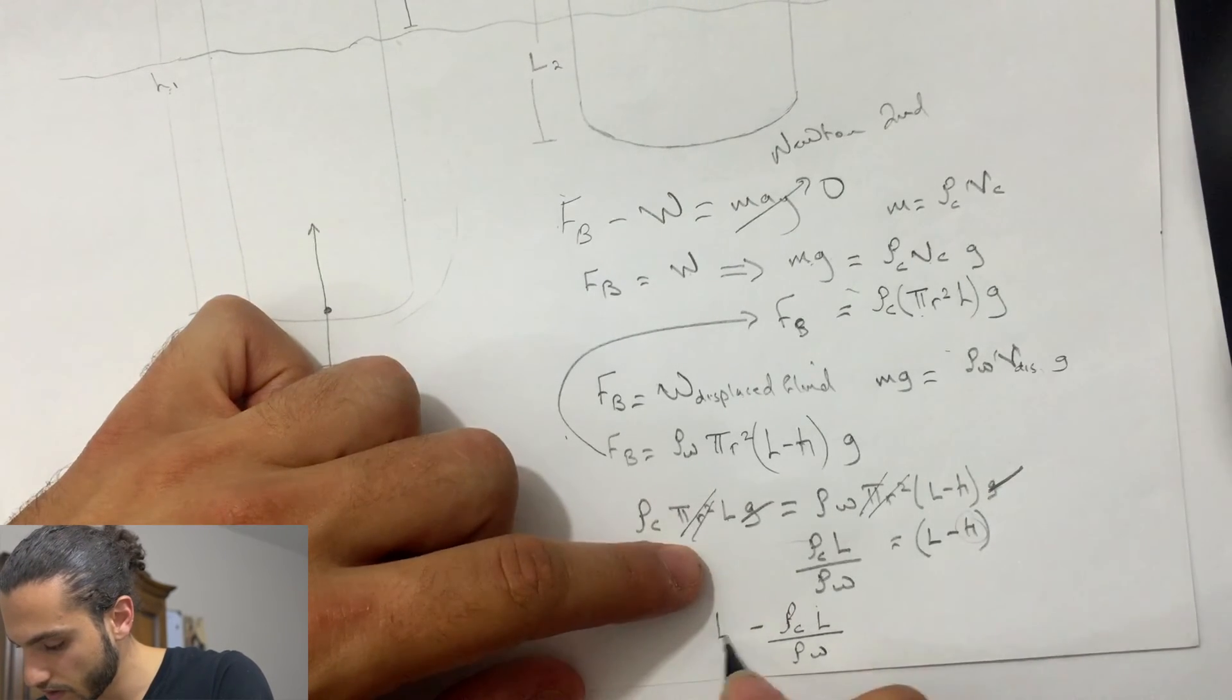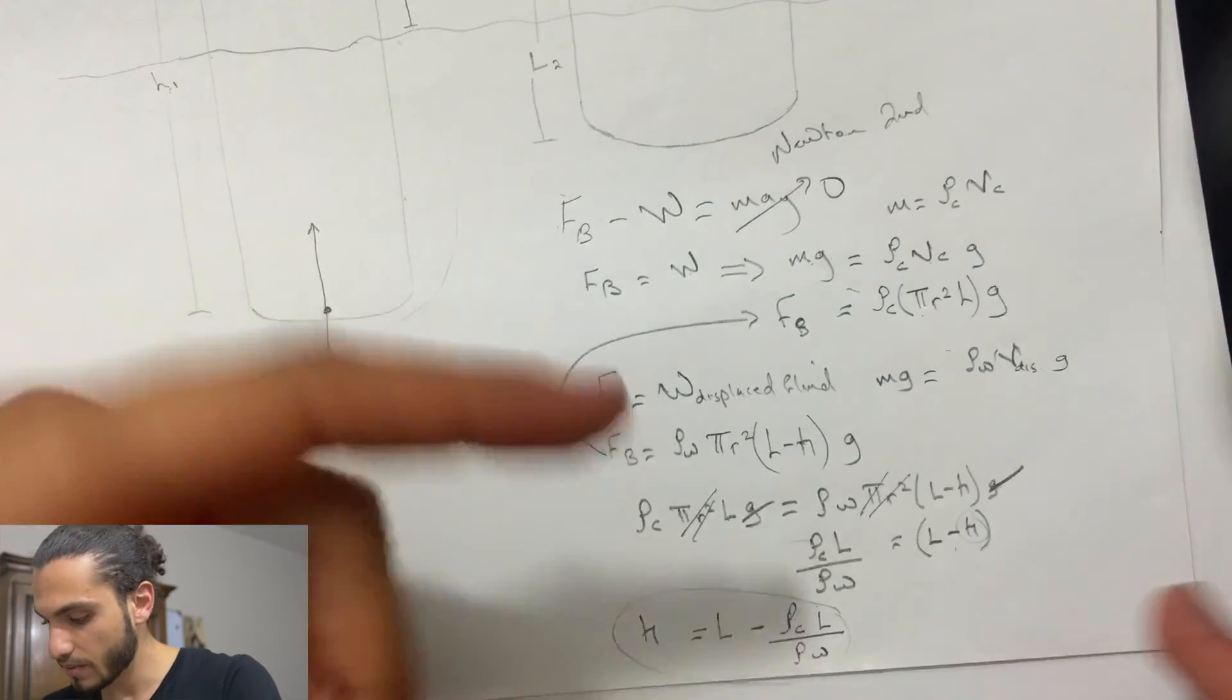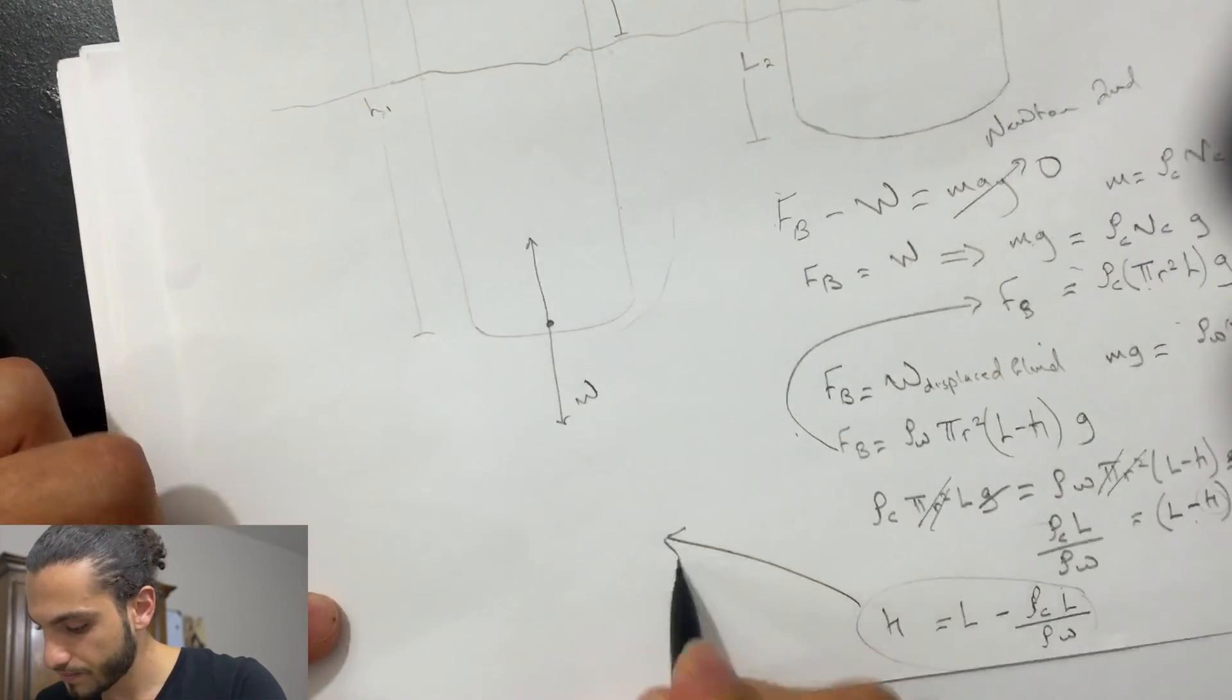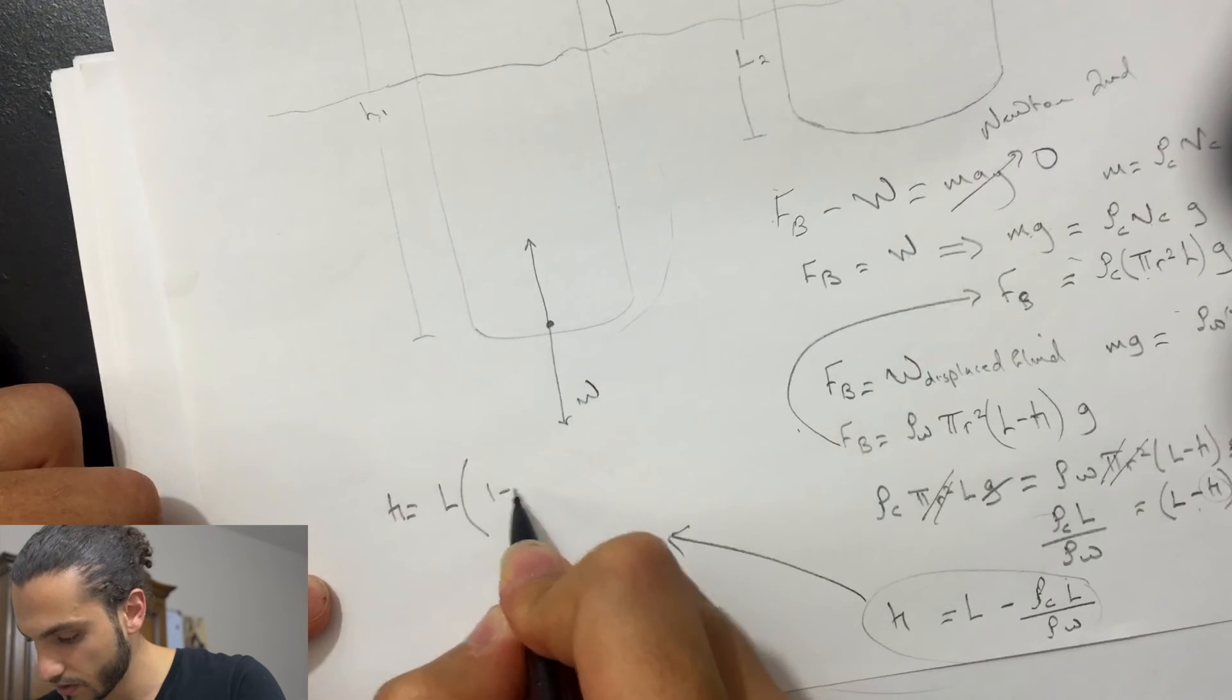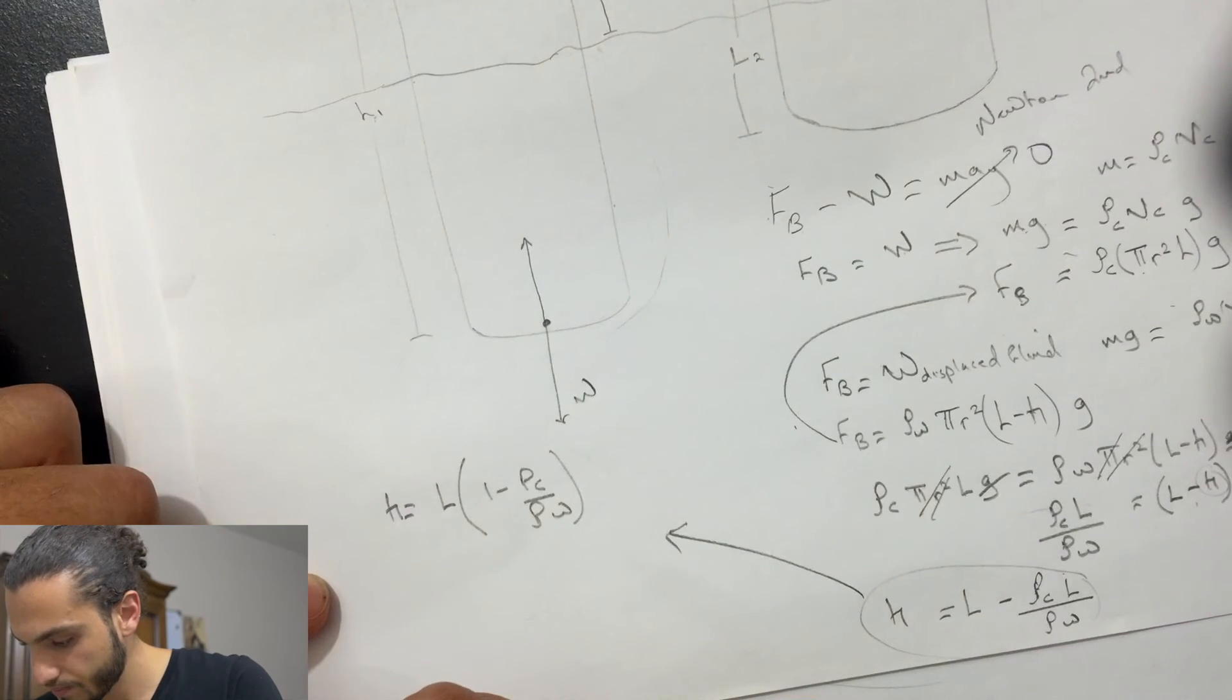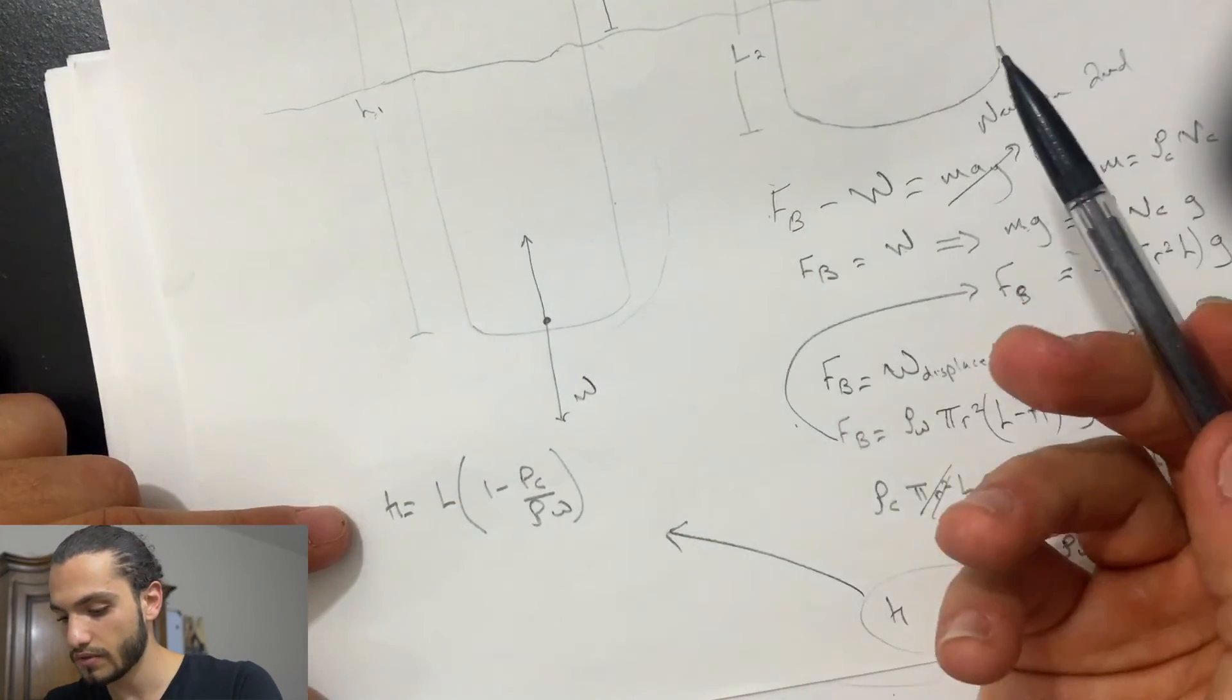We're just solving for this, so this is the equation we got. Now we're just making it more simple. Stick to the sign, so H will be equal to, take L out, so it's 1 minus rho C divided by rho W.